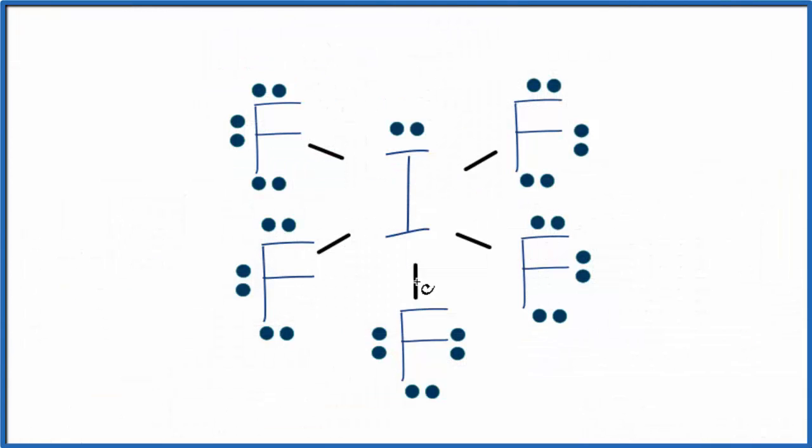So if you couldn't just visualize the square pyramidal, a little bit challenging, you could use a table to figure out what we have as our molecular geometry for IF5. We would count up the number of things attached.